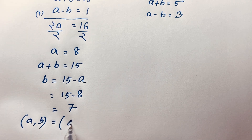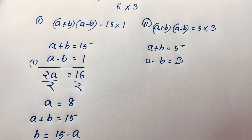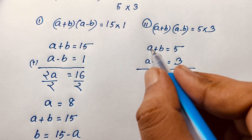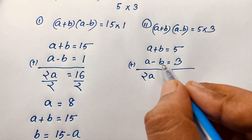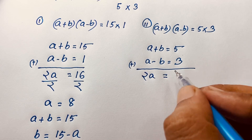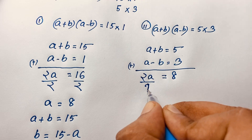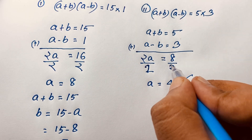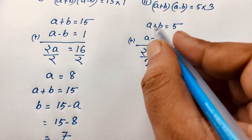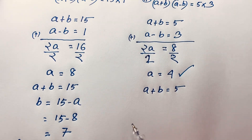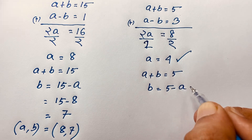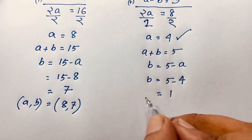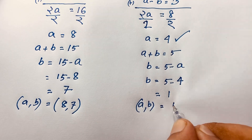For Case 2, a + b = 5 and a - b = 3. Adding both equations: 2a = 8, so a = 4. Then from a + b = 5, b = 5 - 4 = 1. So for Case 2, (a, b) = (4, 1).